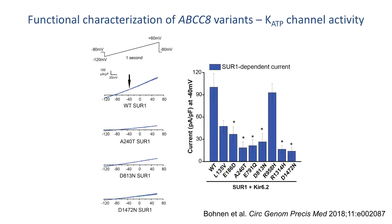The authors examined the consequence of 8 of the 12 identified ABCC8 variants putatively associated with PAH on SUR1 function, with patch clamp electrophysiology providing a direct measurement of whole-cell K-ATP conductance in individual cells across different membrane potentials, as shown here. They observed significantly reduced SUR1-dependent currents with 6 of the 8 SUR1 mutants, and non-significant reductions with the other 2 mutants.